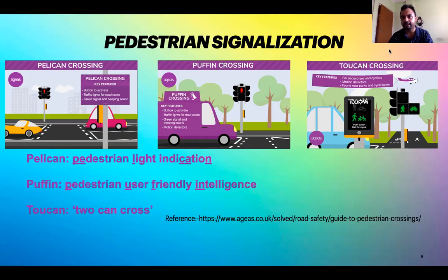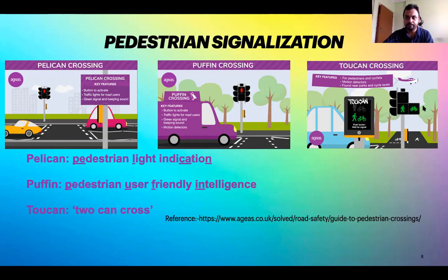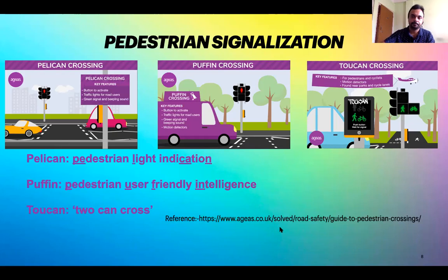The Toucan crossing — 'two can cross' — allows both pedestrians and bicyclists to cross the road. As you can see on screen, the Toucan crossing figure shows symbols for both pedestrians and bicycle users, with green lights for both. There is a link on screen to a website with animated videos explaining all three types of crossings clearly, which I recommend visiting to better understand the concepts.